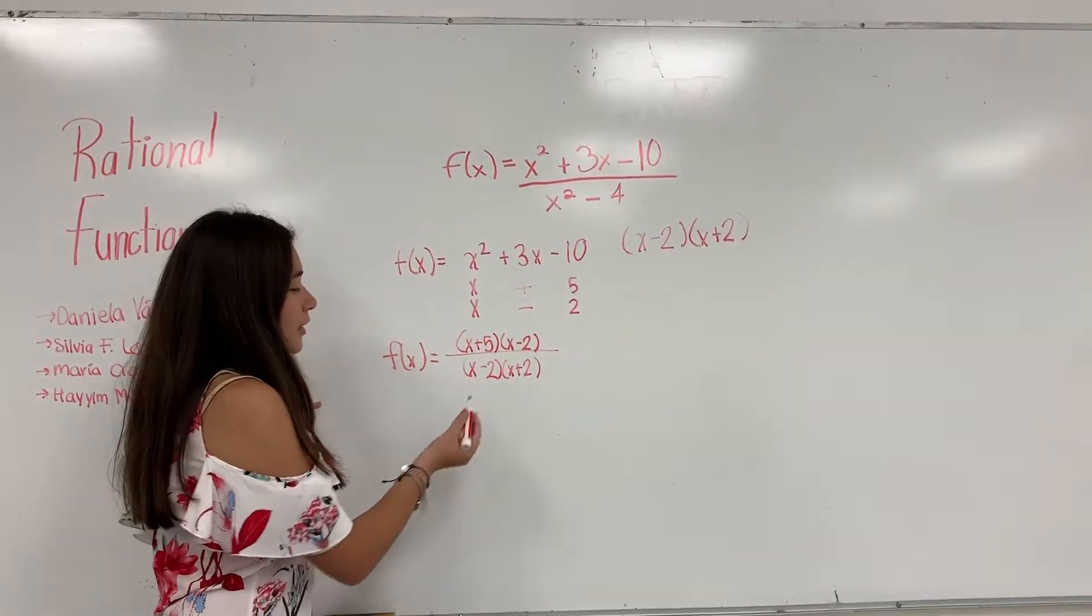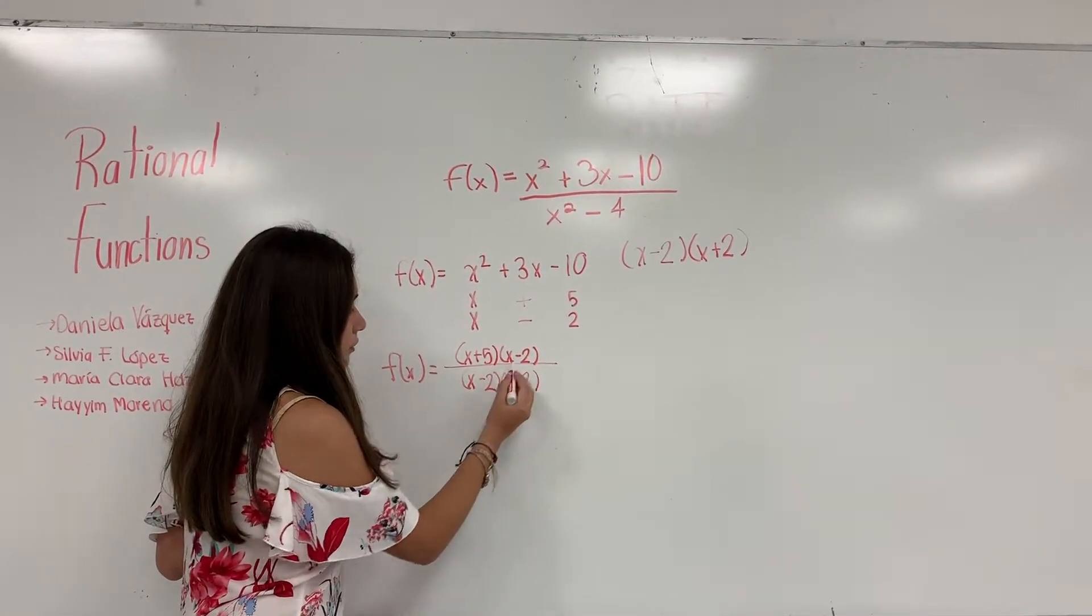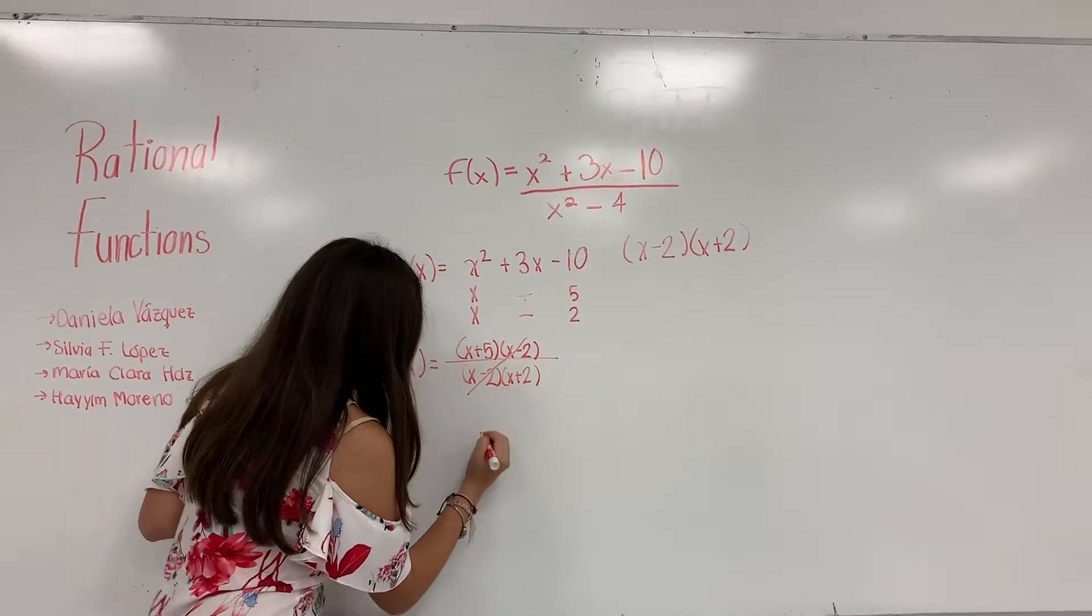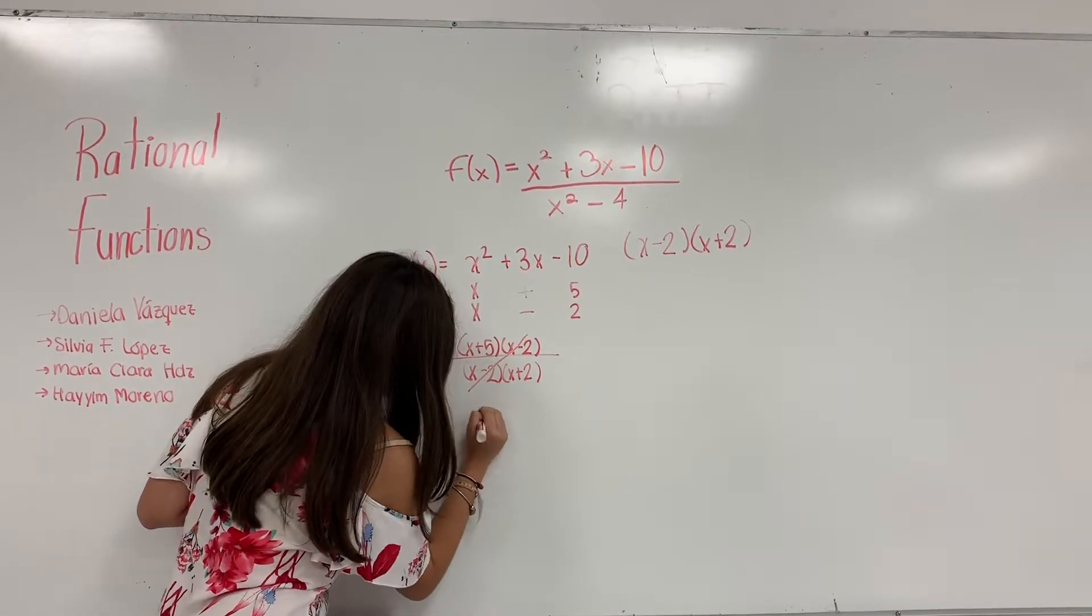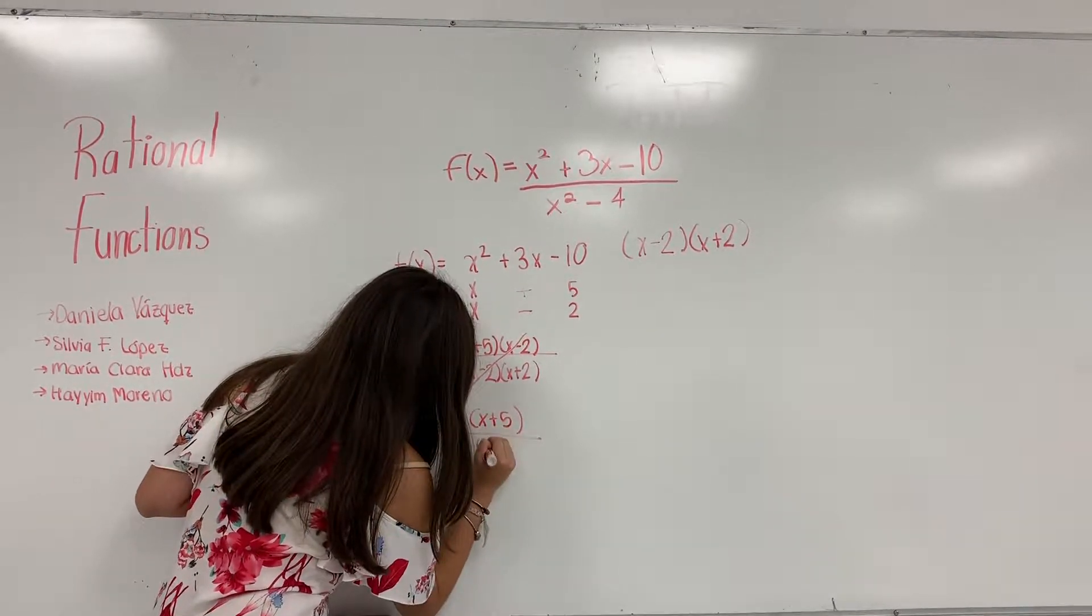With the factor form, we can see that we have the same expression here: x minus 2 and x minus 2. So we can cancel them. So we can rewrite the form as x plus 5 over x plus 2.